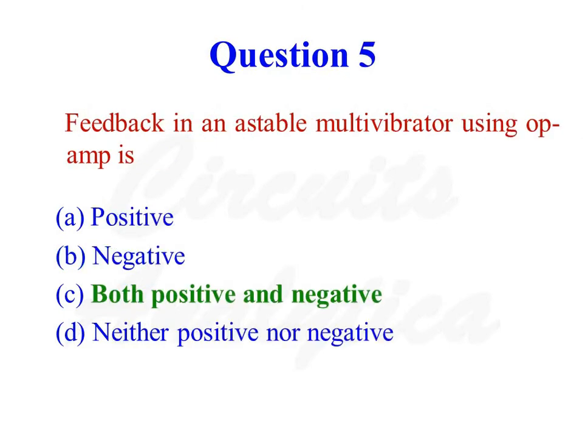Feedback in an astable multivibrator using an op-amp is both positive and negative feedback. A part of the output voltage is fed to the non-inverting input of the op-amp, and another part is fed to the inverting input through the timing components R and C. So both positive and negative feedback exist. The correct answer is option number 3.